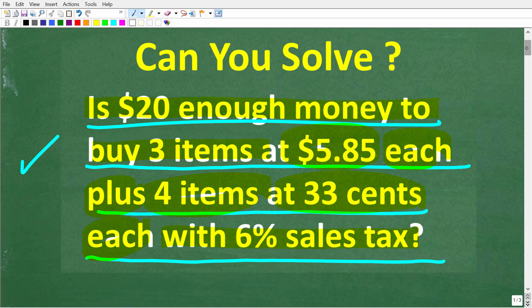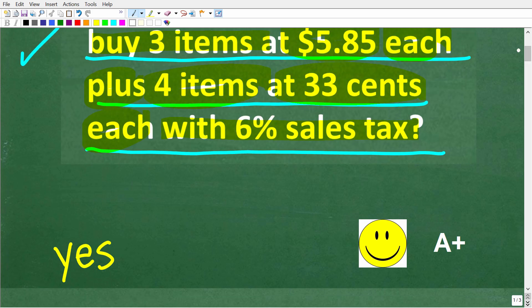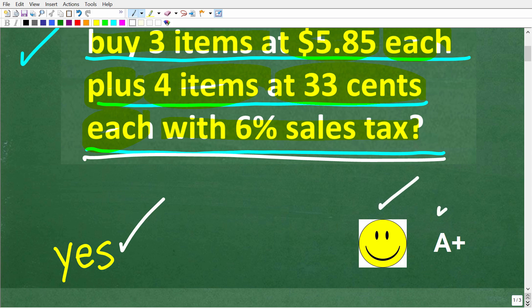Okay, so let's go ahead and take a look at the answer. So the correct answer is yes, $20 is enough money to buy all these items and to pay for the sales tax. Now, if you got this right, well, you'd definitely get a happy face and an A plus.